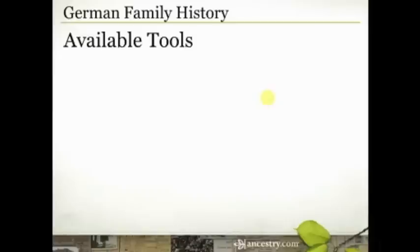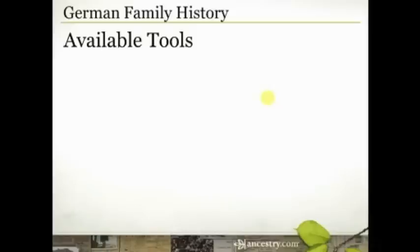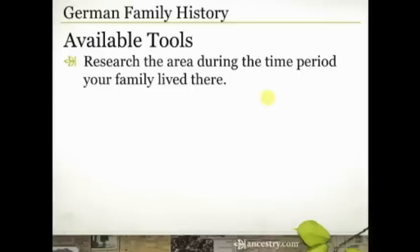So geography becomes really important. Let's talk about some available tools online that you can use to help with German research, particularly this historical research. One of the things I would encourage you to do is once you find the name of a town or a region of Germany, Google it. I say that kind of jokingly, but I'm serious — sometimes we forget to do that simple thing. Just Google the name of the place, and you can also Google the time period. Google allows you to put in a range of years with two dots in the middle. So if my family was in East Prussia, I would Google 'East Prussia 1862..1874' and that would return anything on the web with East Prussia and any year in that range. Use Google — it's your friend.